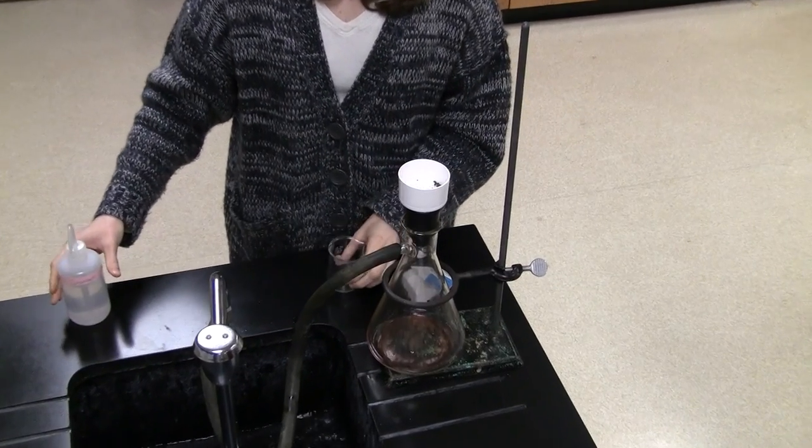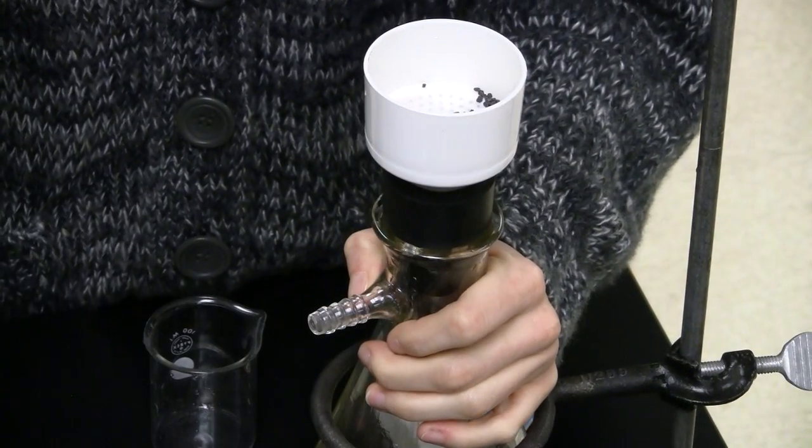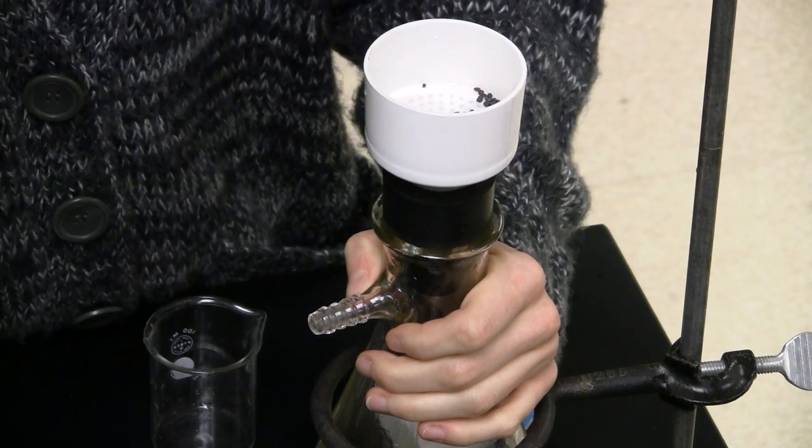remove the tubing from the side arm before turning off the water. Otherwise, water can back up through the tubing into the flask, contaminating your filtrate.